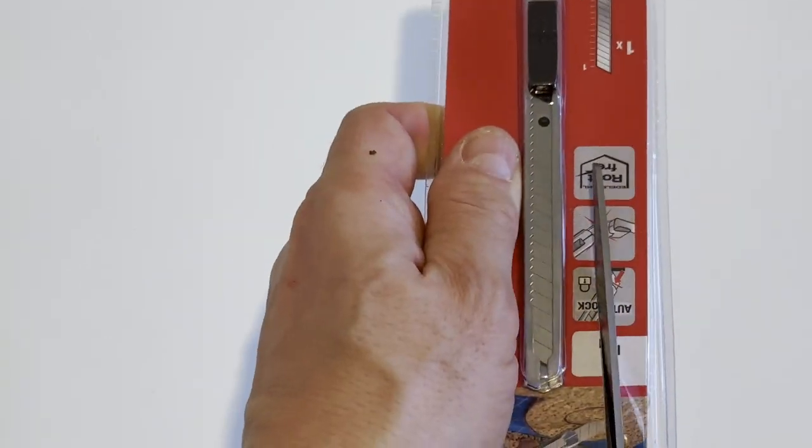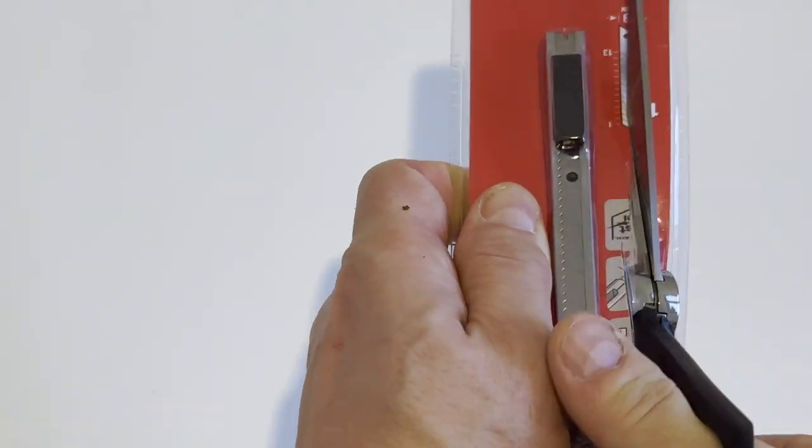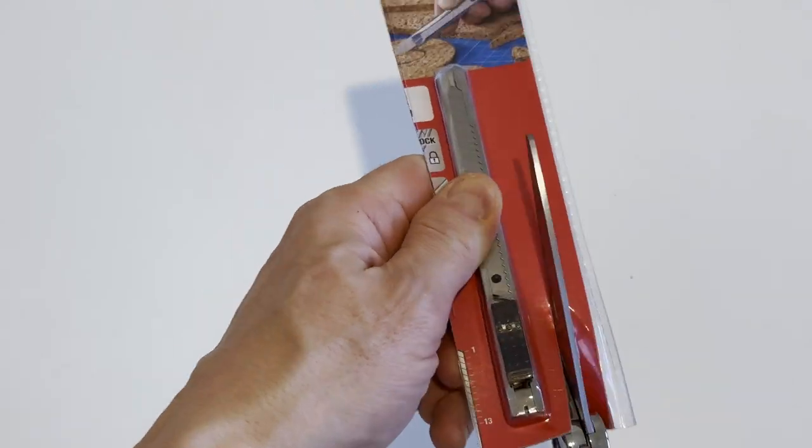It comes packed in clamshell plastic packaging that needs to be cut open with scissors or with a utility knife or other tool.